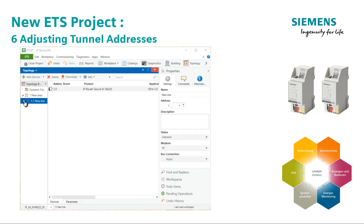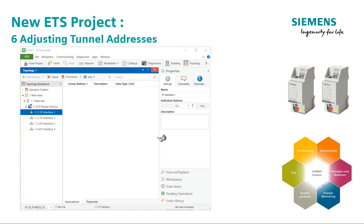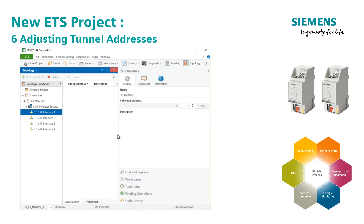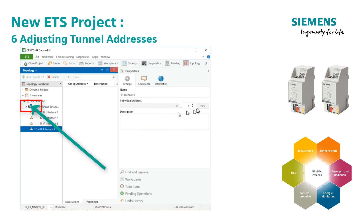Step 6: Adjust the additional physical addresses for the tunnel connections. As already known from the predecessors, when inserting IP devices with several tunnels, ETS creates physical addresses in ascending order, starting with the lowest free address. If you don't agree, you have to make these addresses visible by clicking on the small number symbol on the router's main address, and then change them manually.